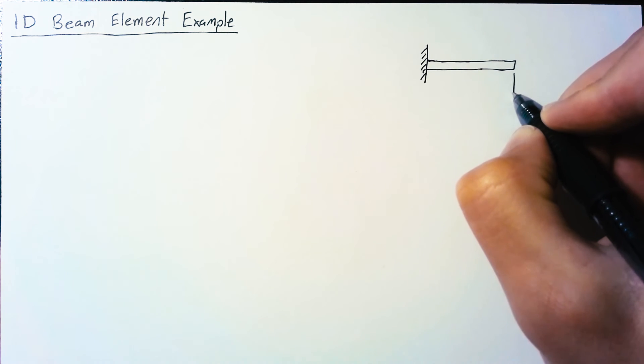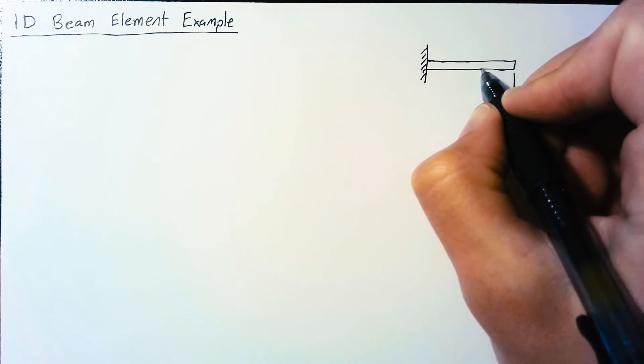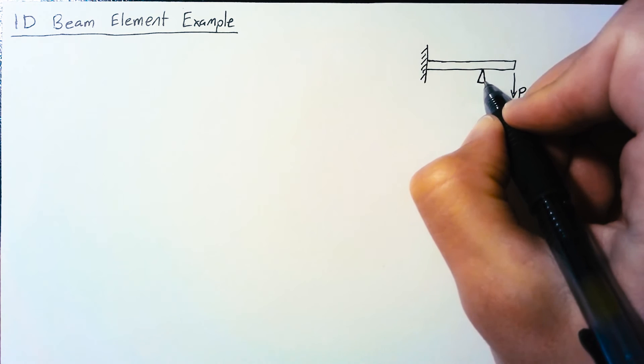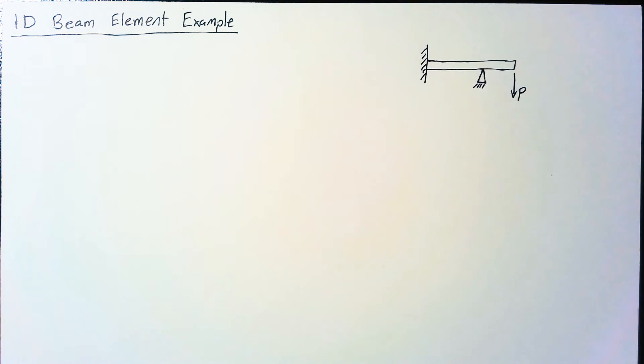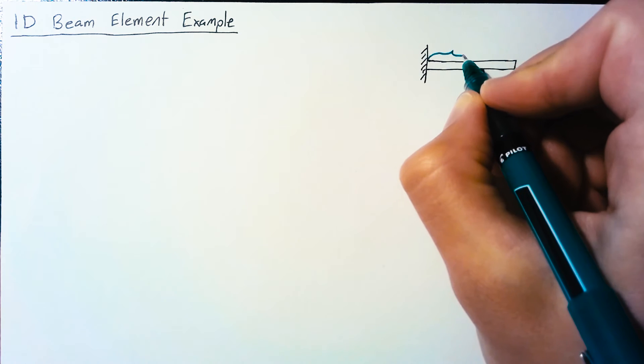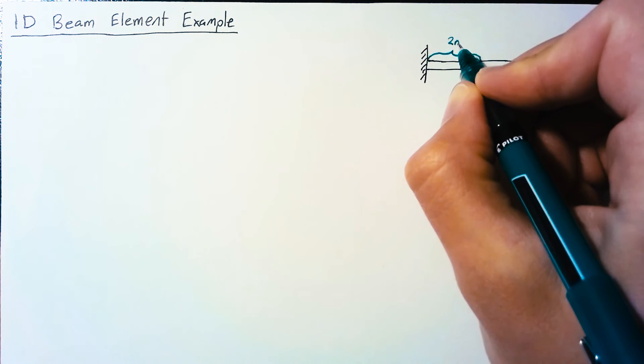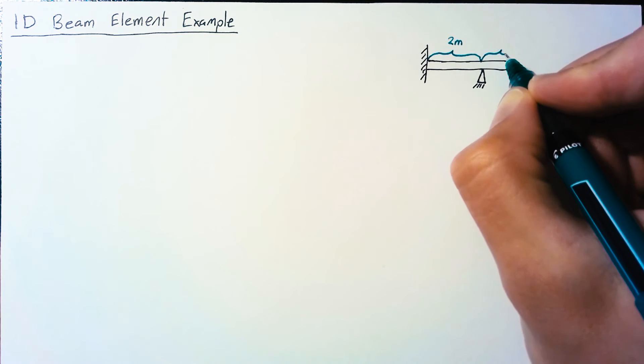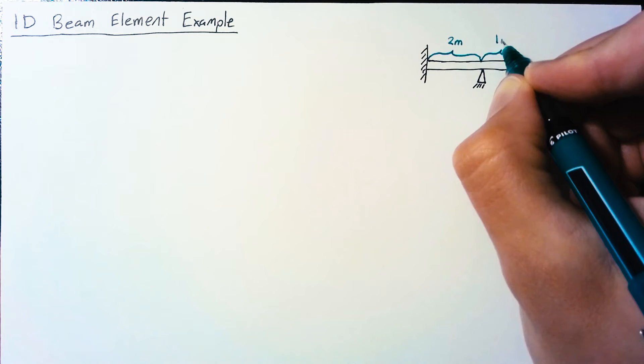To make things more interesting, two-thirds along the length of the beam we're going to have a pinned support. The distance between the wall and the pin support is 2 meters, and the distance between the pin support and the end of the beam is 1 meter.